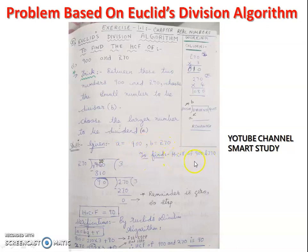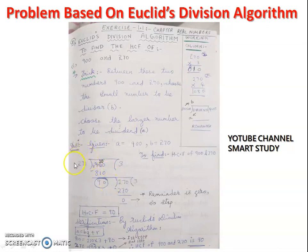Dividing 900 by 270: 270 threes are 810, and 900 minus 810 gives remainder 90. Now the divisor 270 becomes the new dividend, and 90 becomes the new divisor. 90 threes are 270, so 270 minus 270 is 0. When the remainder becomes 0, we stop the division. The last divisor is the HCF. So HCF is 90.